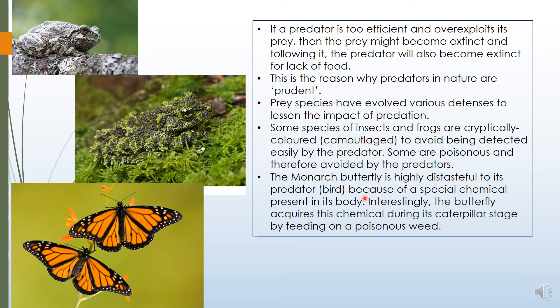The monarch butterfly is highly distasteful to its predators. When a predator feeds upon the monarch butterfly, it is highly tasteless — they have certain chemicals acquired during the larval stage. When another organism feeds upon the monarch butterfly, it is so tasteless that they do not keep on eating. So the population of the monarch butterfly can keep on growing without fear of predators.